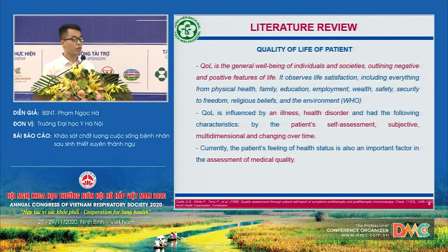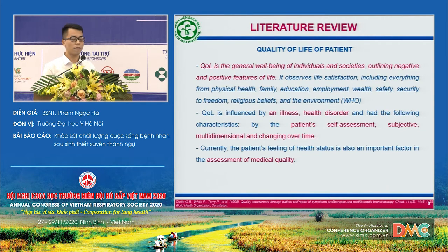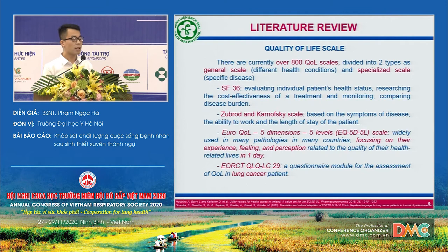Quality of life is the general well-being of individuals and societies, outlining negative and positive features of life. Quality of life is affected by health disorders and the following characteristics: self-assessment, subjective, multidimensional, and variable over time. There are currently over 800 quality of life scales, divided into two types: general scales and specific life scales.